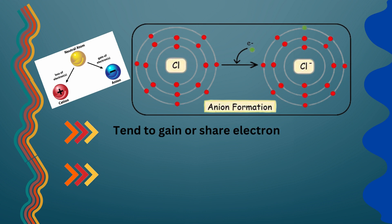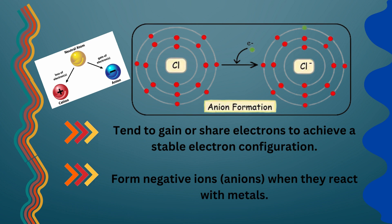Tend to gain or share electrons to achieve a stable electron configuration. Form negative ions, anions, when they react with metals.